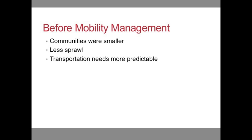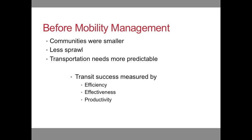How were transportation solutions approached before mobility management? Historically, transportation providers' jobs, whether buses, taxis, even volunteer transportation, have been easier than they are today. Communities were smaller. There was less sprawl. People's transportation needs were more predictable. In this era, operational concerns were of prime strategic importance, and customer concerns were largely subordinated — not ignored, but subordinated to the larger mission of successfully running a system.